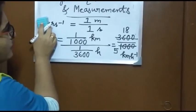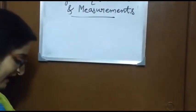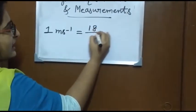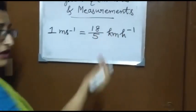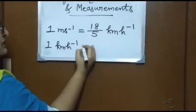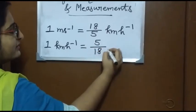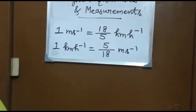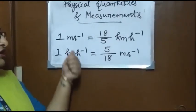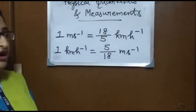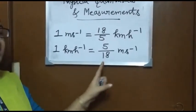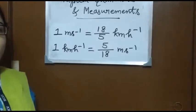So 1 meter per second equals 18/5 kilometer per hour. And vice versa, 1 kilometer per hour equals 5/18 meter per second. If we need to convert meter per second into kilometer per hour, we multiply by 18/5. And to convert kilometer per hour into meter per second, we multiply by 5/18.